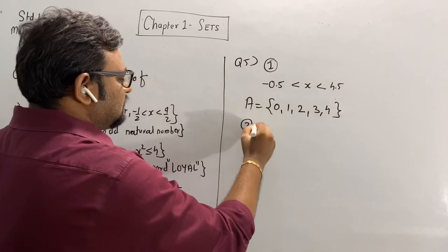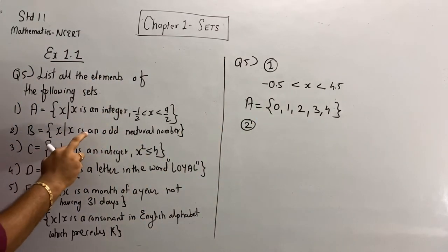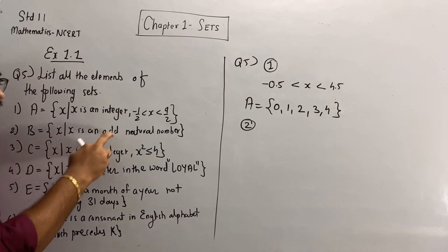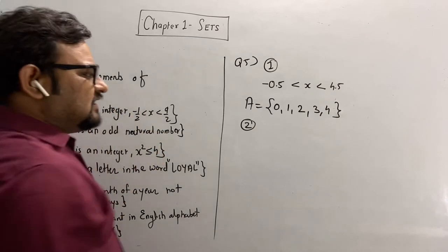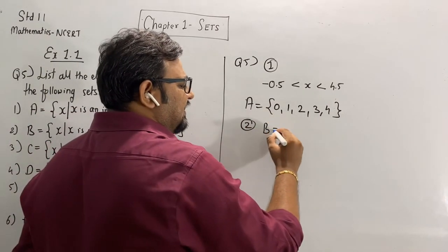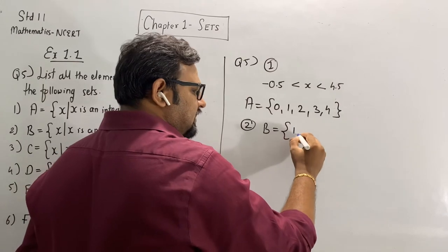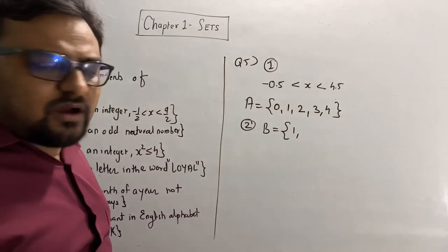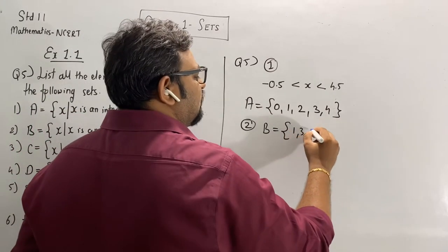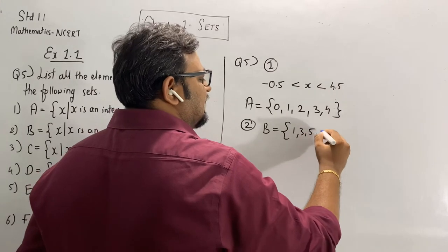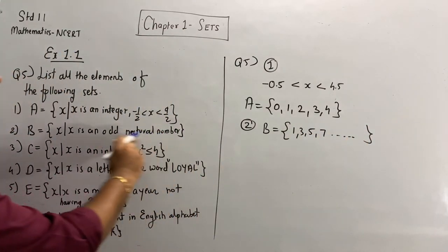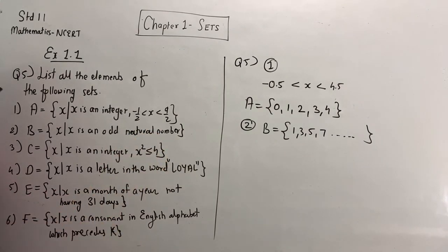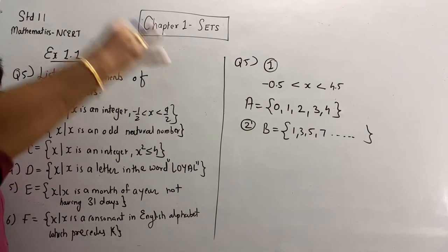The second part: {x such that x is an odd natural number}. It's very simple. Natural numbers begin with 1. Two is even, so odd natural numbers are 3, 5, 7, and so on. There is no end — it is not given that it is less than some value. So the answer is {1, 3, 5, 7, ...}.